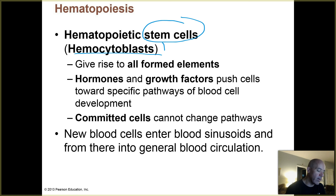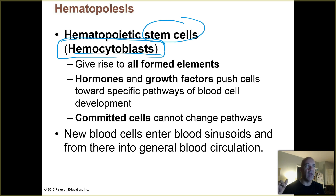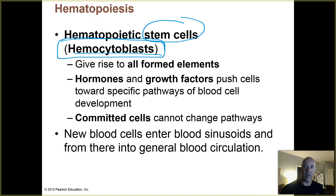Those stem cells are called hemocytoblasts, and they're very good at turning into all of the various types of blood cells. If you're ever in the unfortunate situation of having a severe form of leukemia where the only way to cure you is to wipe out all of your bone marrow, typically what's done is a bone marrow transplant with a carefully matched donor. It doesn't take a lot — as long as you get some of these hemocytoblasts, or hematopoietic stem cells, into the patient, those cells will divide and recreate all of the different formed elements of the blood.